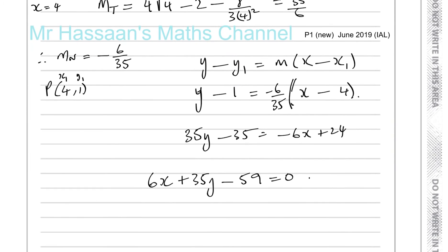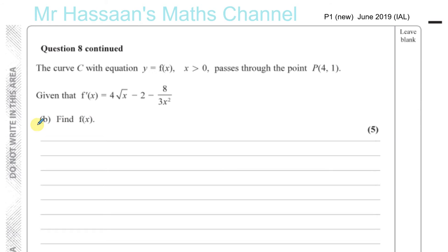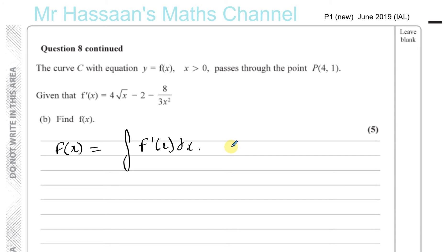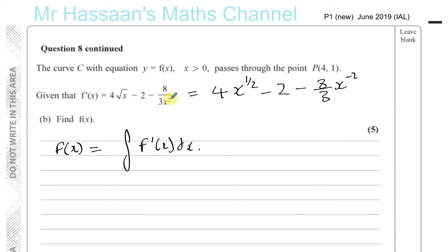Part (b): find f(x). The given f'(x) is the gradient function; to find the original function we integrate it. So f(x) is found by integrating the gradient function with respect to x. First, rewrite in index form: √x = x^(1/2), and x² in the denominator becomes x^(−2) on top, giving: 4x^(1/2) − 2 − (8/3)x^(−2).